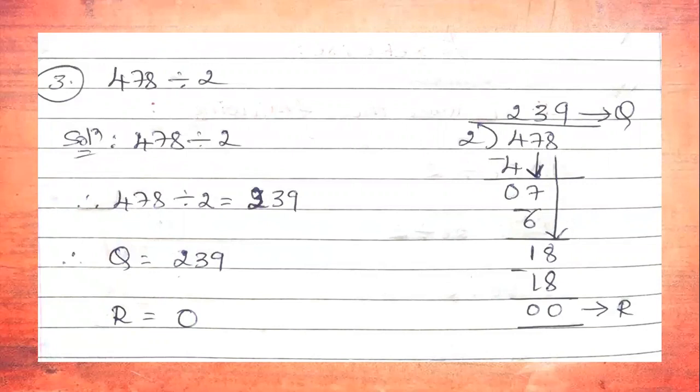From the 2-table: 2×1=2, 2×2=4, 2×3=6. The first digit is 4, so we need a number equal to or less than 4. Since 2×2=4 is exactly divisible, we take 2×2=4. Subtracting: 4−4=0.